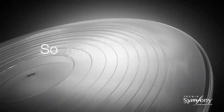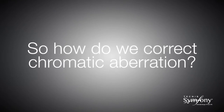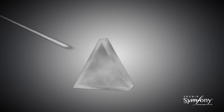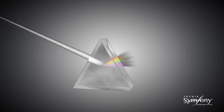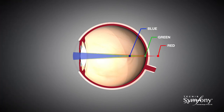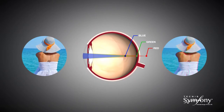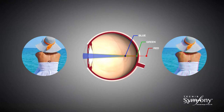Now let us look at how the achromatic technology works to correct chromatic aberration. Visible light is composed of a range of wavelengths that are red at one extreme and blue at the other. The cornea of the natural eye is a refractive lens which is more powerful for blue light than red. The eye can only be in focus for one wavelength at a time. As such, the remaining wavelengths of visible light which are out of focus cause blur and a reduction in contrast vision.